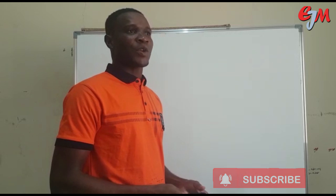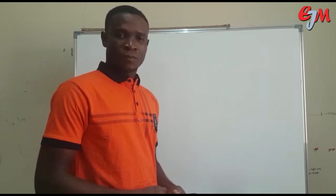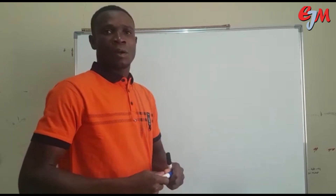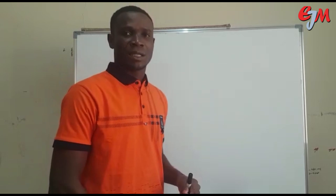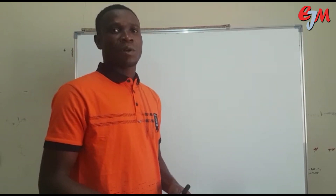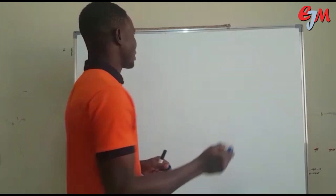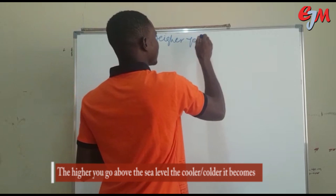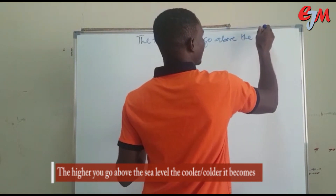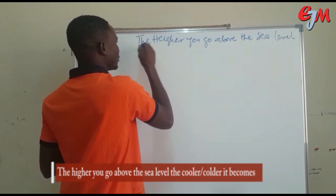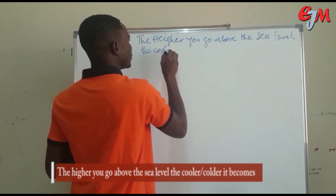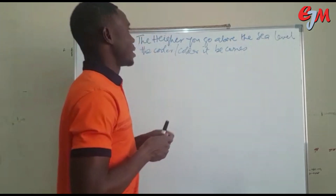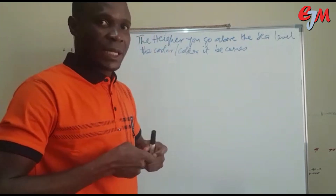Two of our students came up arguing about a particular assertion their teacher told them when they were in primary school. They brought it to us and we told them that what their teacher said back then was very much true, and I want to prove it to you mathematically. The assertion is that the higher you go above sea level, the cooler it becomes. That is the assertion, and I told them that their teacher was correct. So I want to prove it to you mathematically.